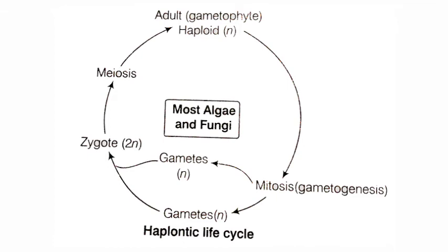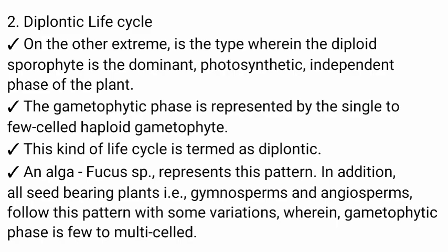Let's see the diagrammatic representation of the haplontic life cycle. Most algae and fungi show this pattern. In the haplontic life cycle, the zygote is the only diploid cell; the remaining life cycle is haploid. The diploid zygote undergoes meiosis and forms the adult gametophyte, which is in haploid condition. The haploid gametophyte undergoes mitosis and forms gametes, and these gametes fuse to form the diploid zygote. The key point is that in the haplontic life cycle, the only diploid cell is the zygote.